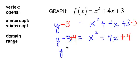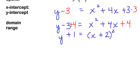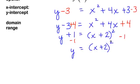If I factor that, it would be x plus 2 times x plus 2, which is x plus 2 squared. Now let's solve for y — subtract 1 from both sides. y is equal to x plus 2 squared minus 1.